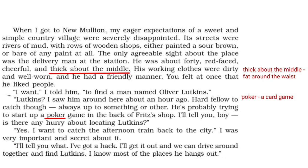When he got to New Mullion, his eager expectations of a sweet and simple country village were severely disappointed. Its streets were rivers of mud with rows of wooden shops painted a sour brown or bare of any paint at all. The only agreeable sight was a delivery man at the station — about 40 years old, red-faced, cheerful, and thick about the middle. His working clothes were dirty and well-worn, but he had a friendly manner. The narrator went up to him and asked about Oliver Lutkins.